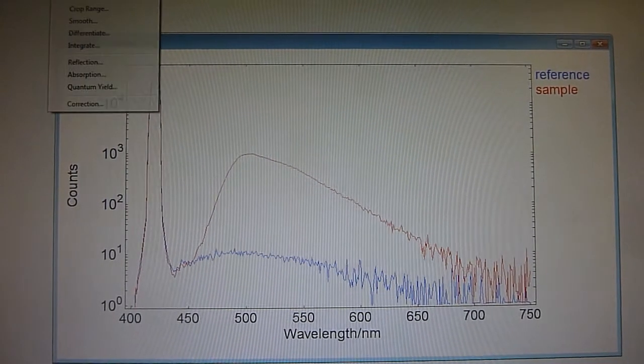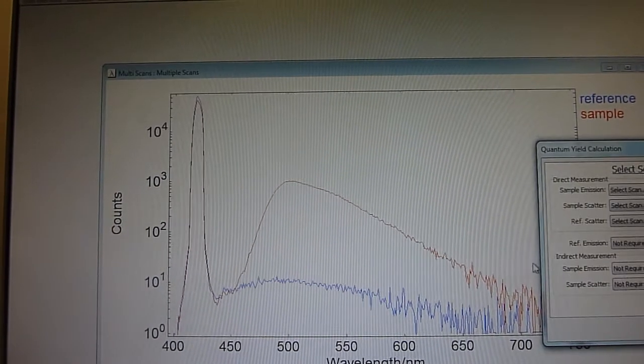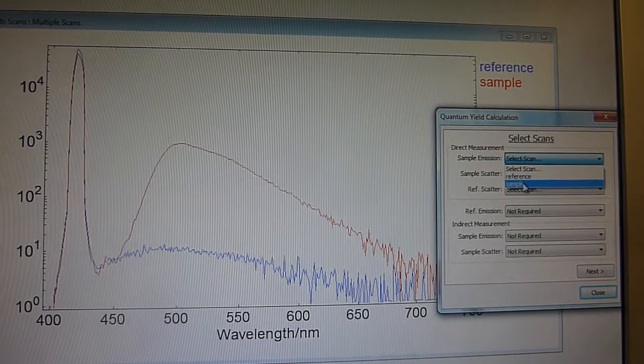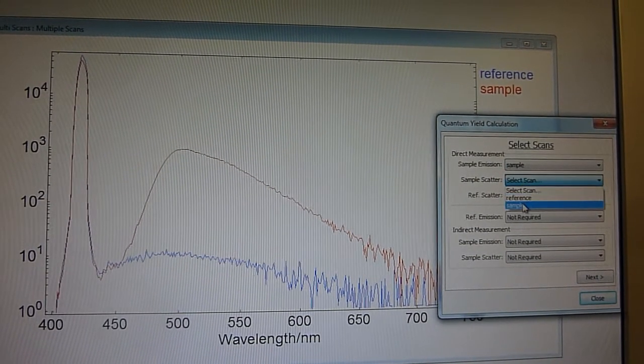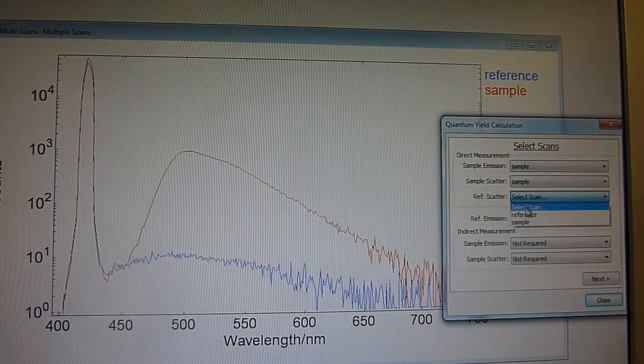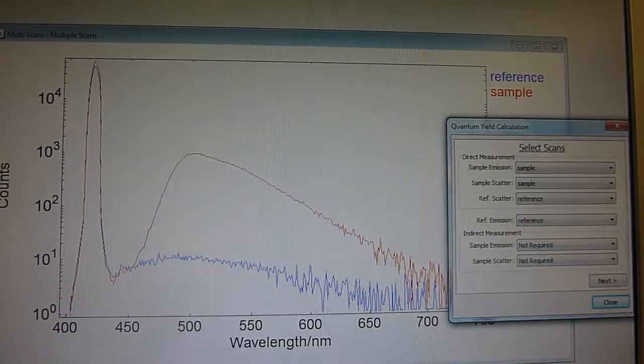So let's now go ahead and do a quantum yield measurement. We'll just click here quantum yield and let's select the sample emission is from the sample scan and the sample scatter is from the sample scan. Whereas the reference scatter is from the reference scan and the reference emission is from the reference scan.